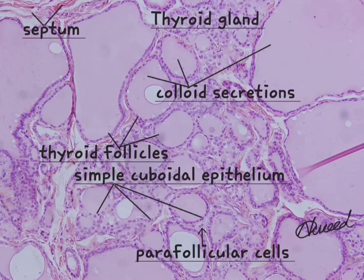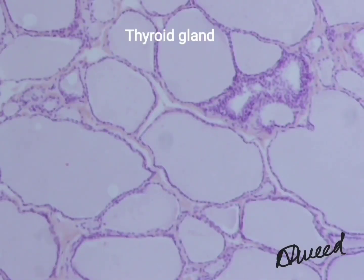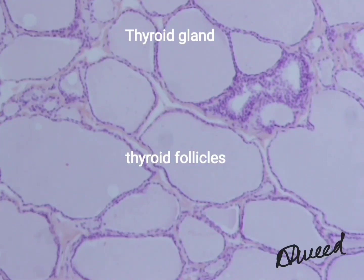Parafollicular cells lie singly or in small groups among follicular cells, also called clear cells or C cells. They secrete a hormone called calcitonin.